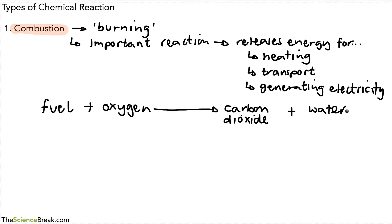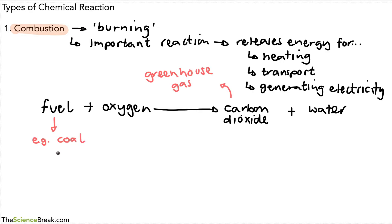It's worth mentioning that we burn a lot of fuels, and there is a lot of combustion going on that produces carbon dioxide. Remember, carbon dioxide is counted as a greenhouse gas that contributes to climate change. The fuel in the equation is not a specific chemical — we can have a whole bunch of different fuels: coal, oil, natural gas. All of these are fuels that can burn.